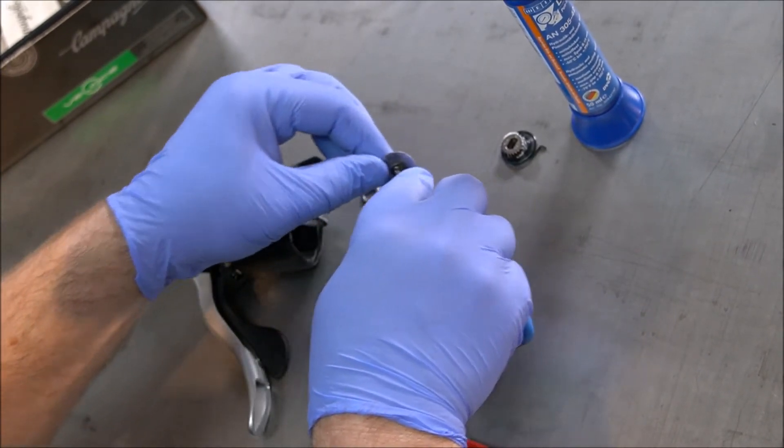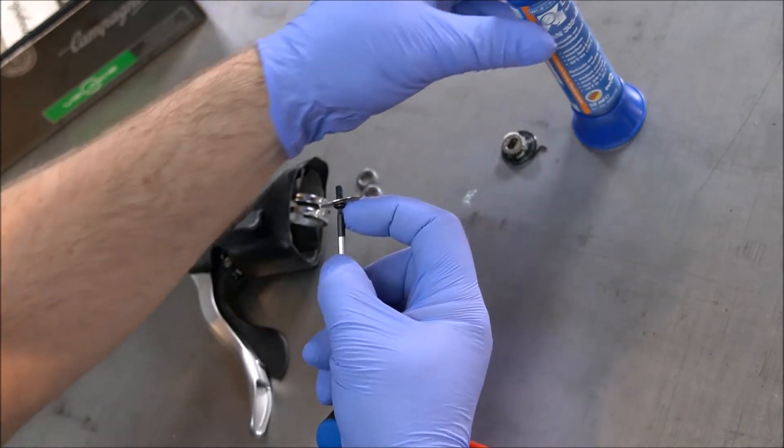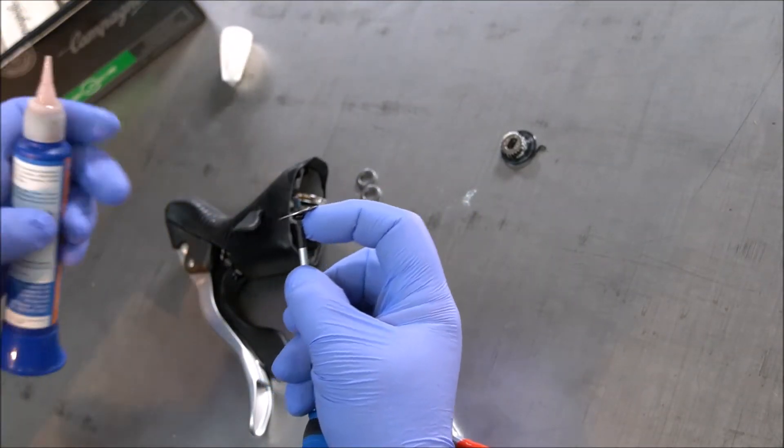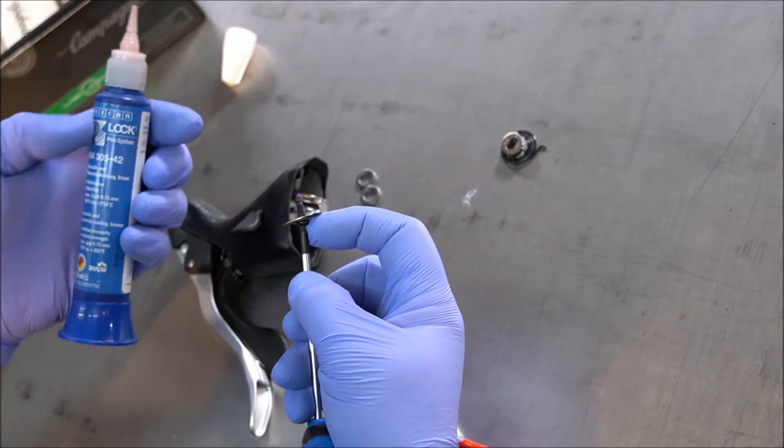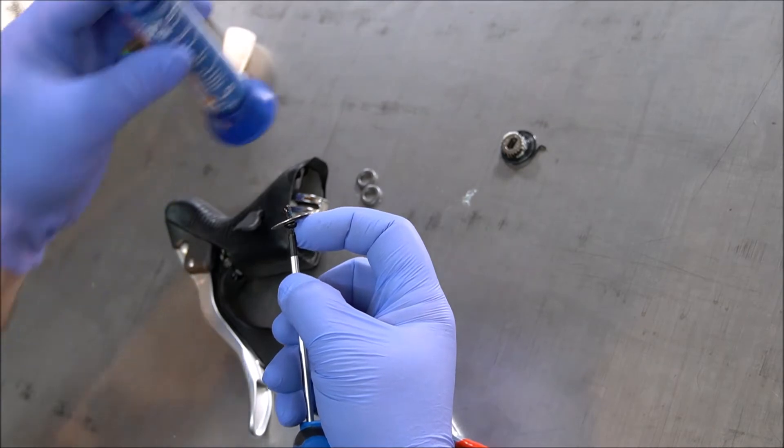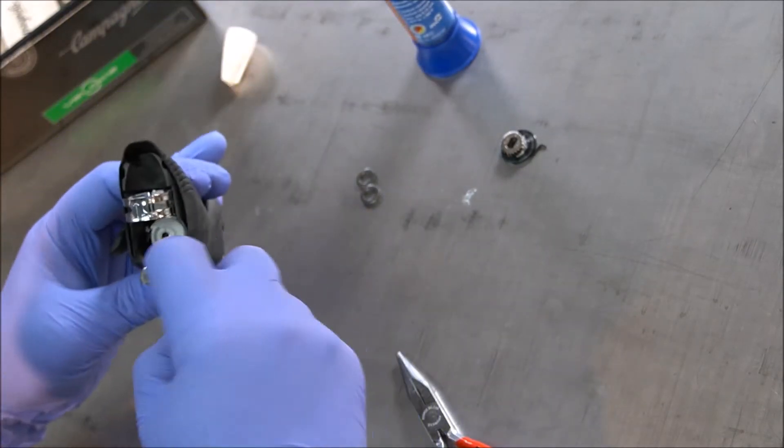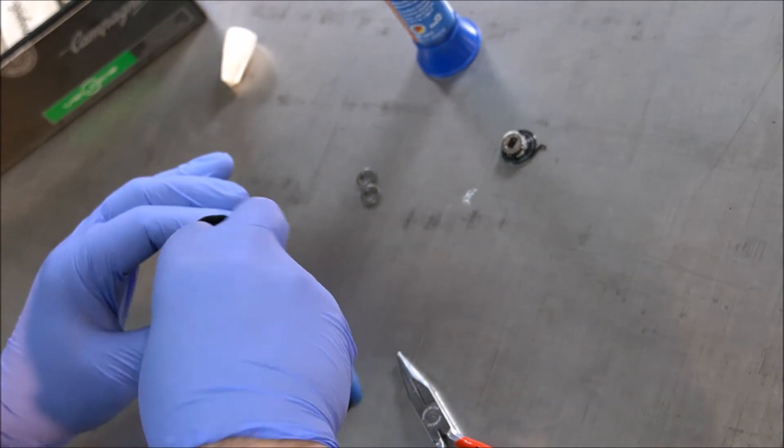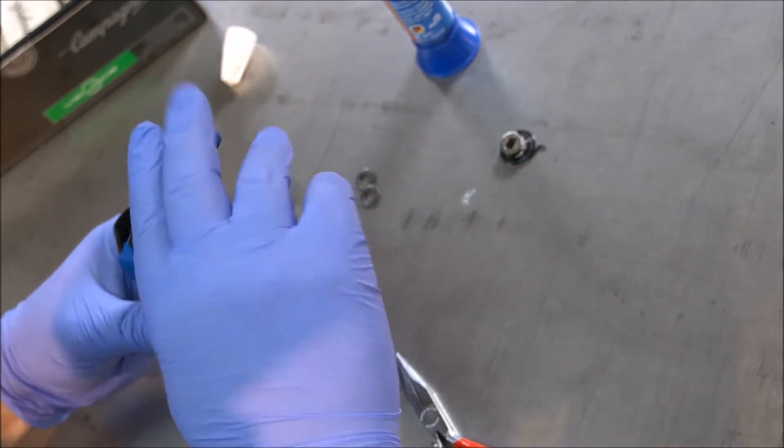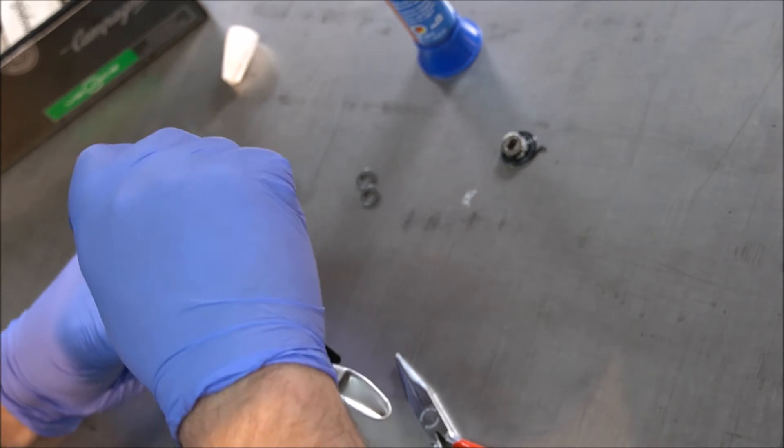And after that, the screw has to be reassembled. I use a drop of low force Loctite. Just a little bit. And to tighten it, press the release lever so that the spool is blocked.